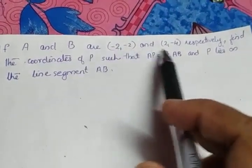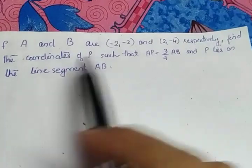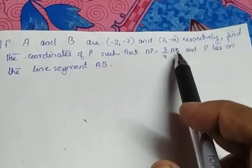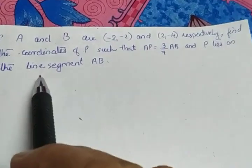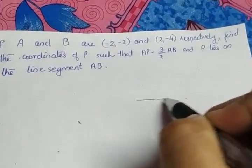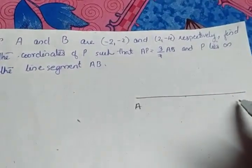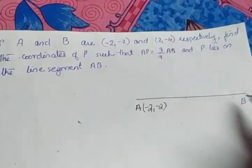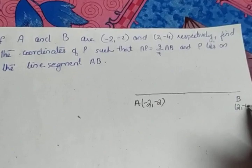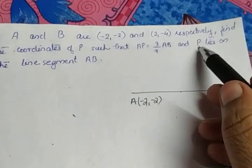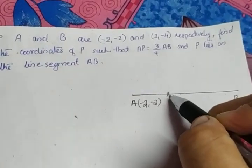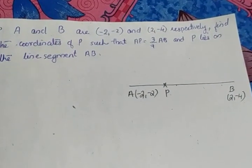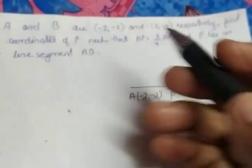If A and B are (-2, -2) and (2, -4) respectively, find the coordinates of P such that AP is equal to 3/7 of AB and P lies on the line segment AB. So we can draw a line segment AB. A is given as (-2, -2) and B is given as (2, -4). P lies on the line segment AB and the question is to find the coordinates of P.